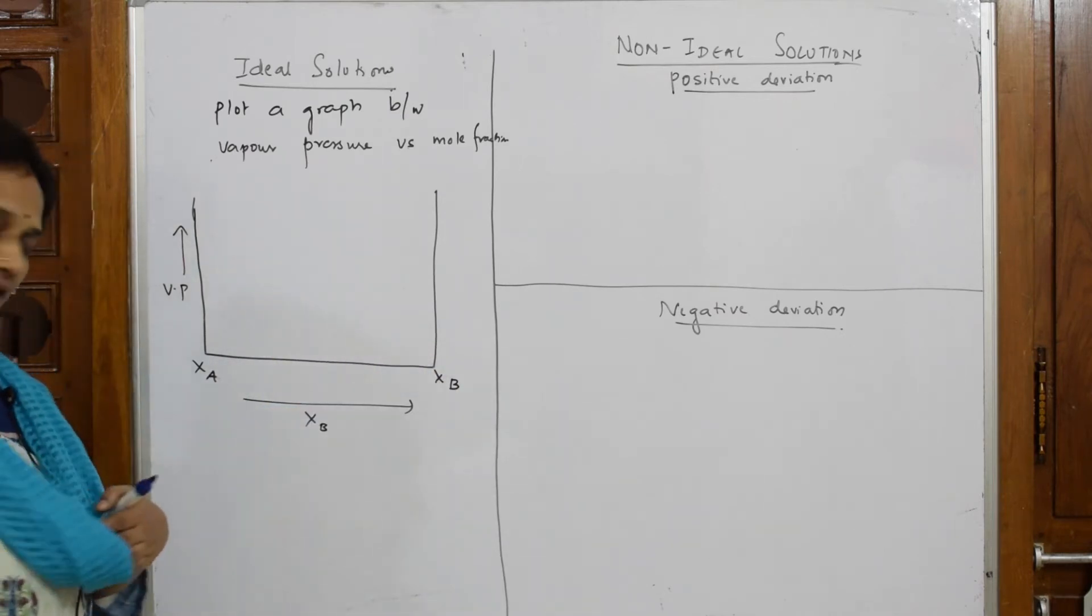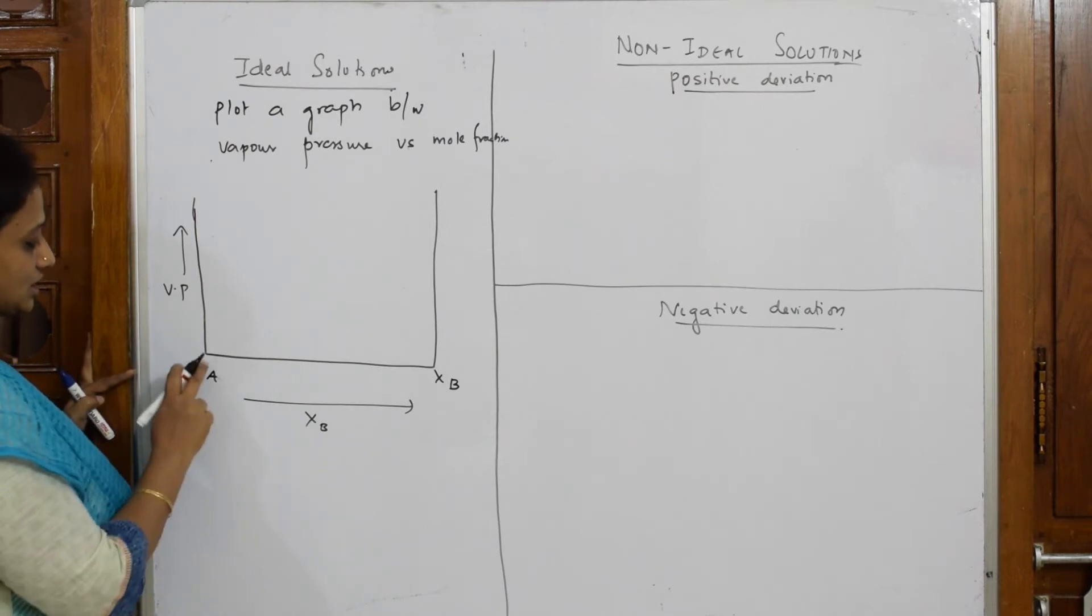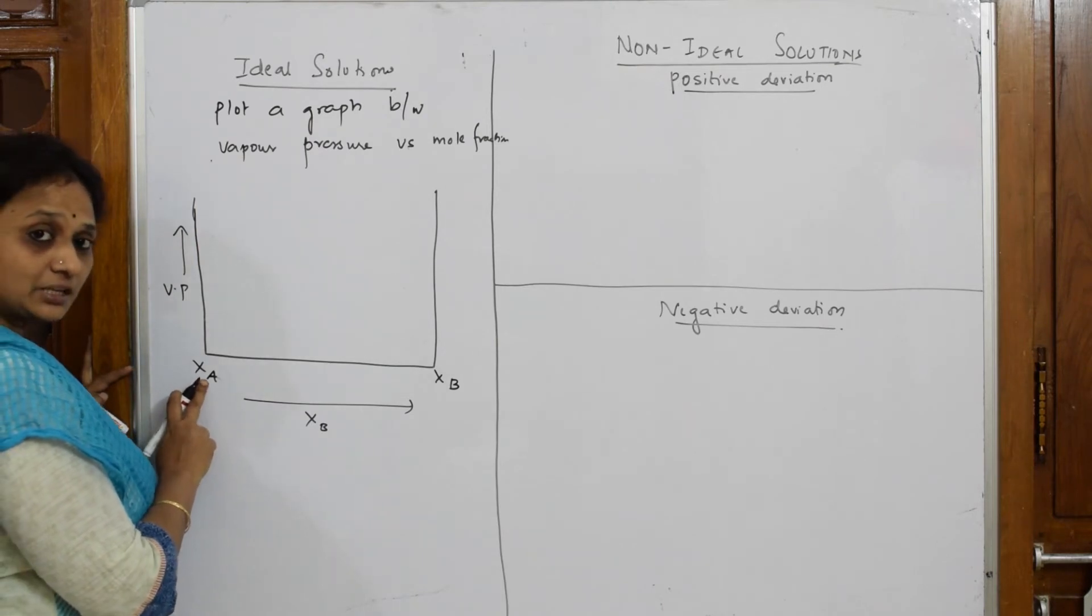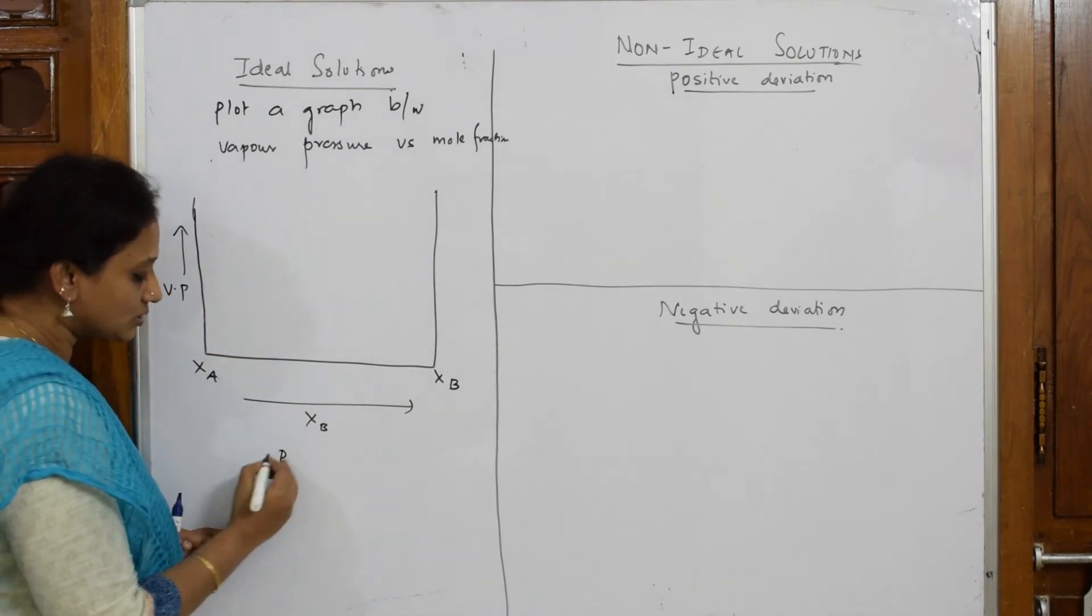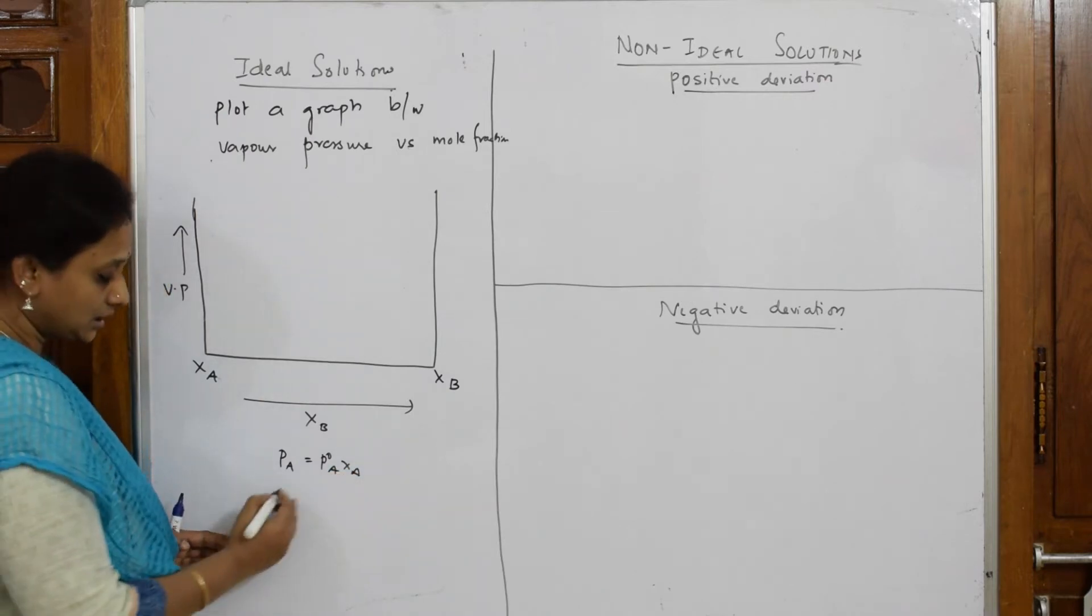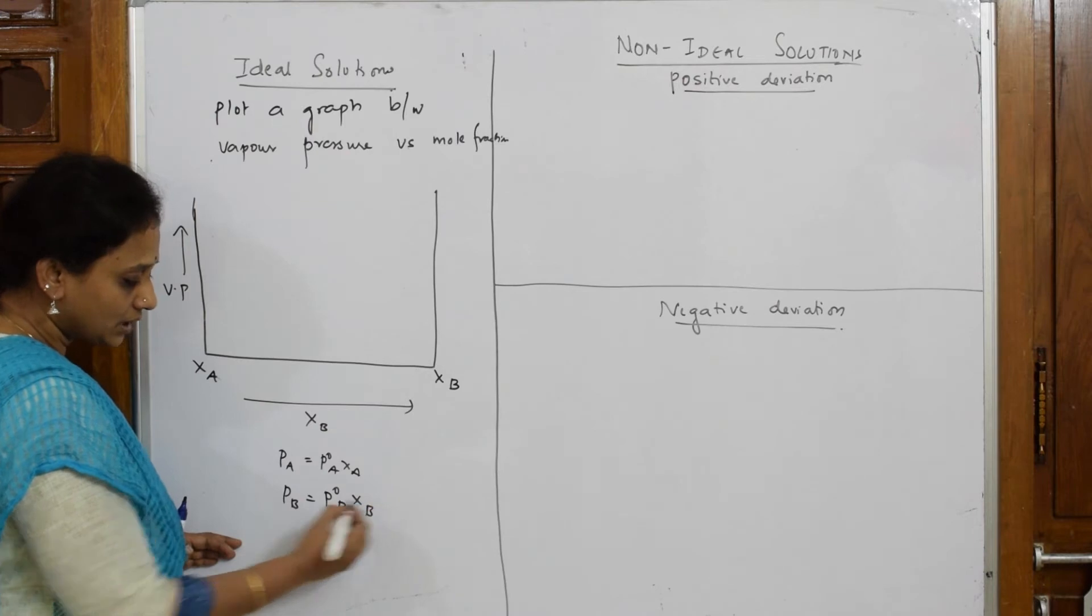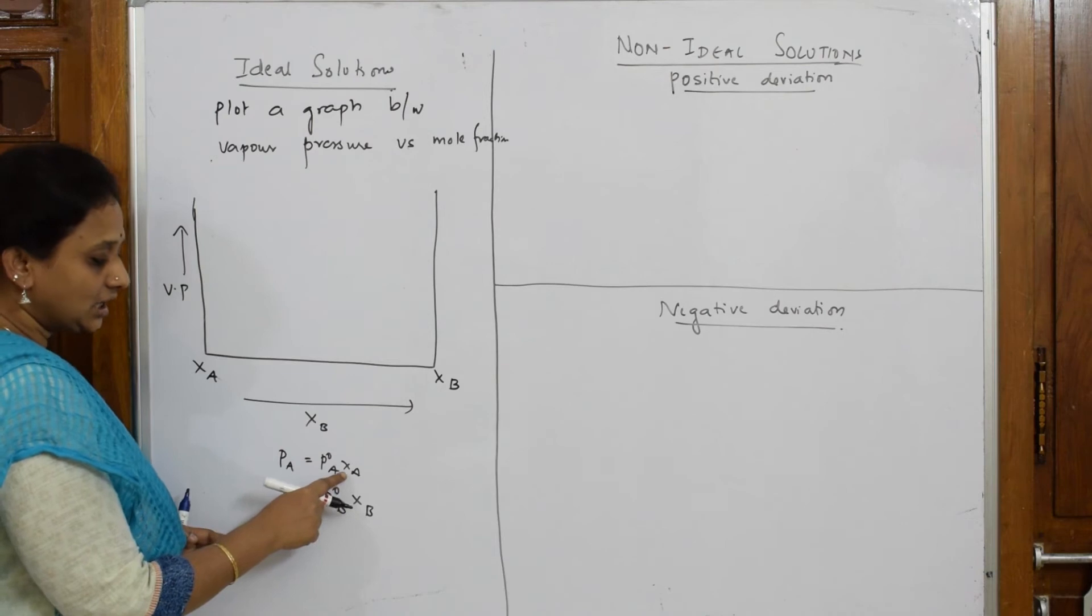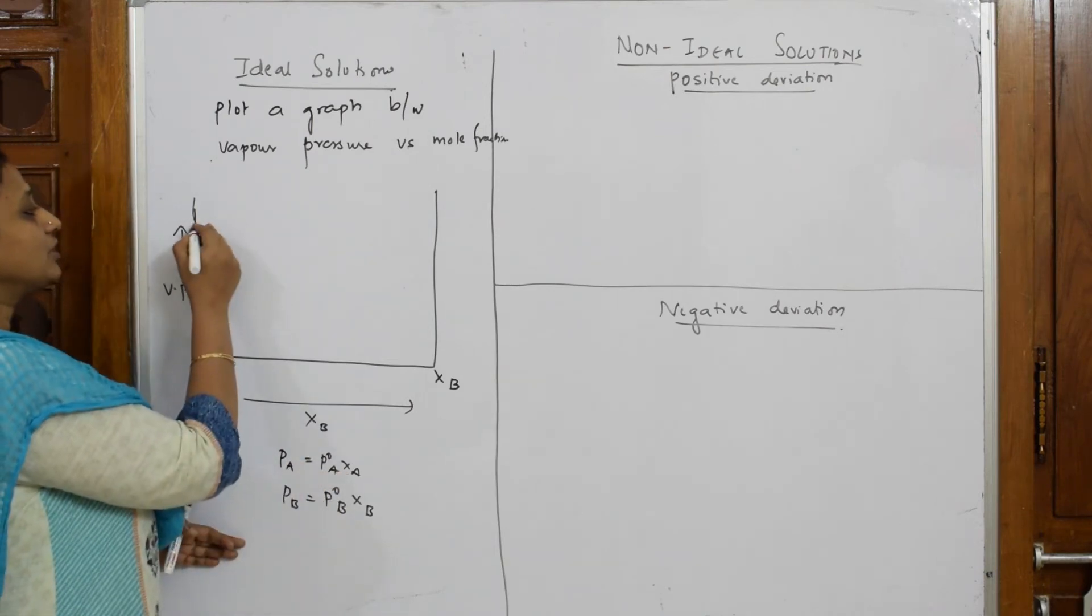Now initially when XA, basically XA initially what happened, the vapor pressure exerted by the pure solvent of XA. Once again I said according to Raoult's law, PA is equal to P naught A times XA, PB is equal to P naught B times XB. Now what happened when the component XA is equal to one initially, the vapor pressure exerted by this is P naught A.